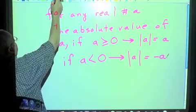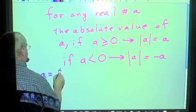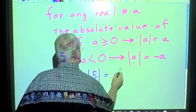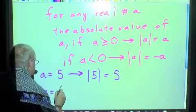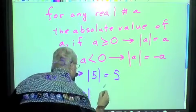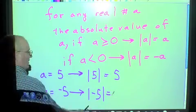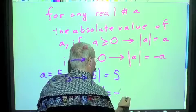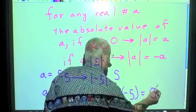Let's do a simple example. A equals 5, then absolute value of 5 equals 5. All right, a equals negative 5, then absolute value of negative 5 is the opposite or the negative of a negative 5 equals a negative negative 5 equals 5.